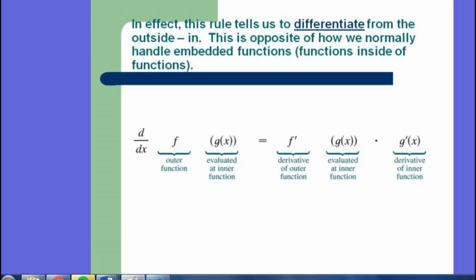In effect, this rule tells us how to differentiate from the outside in. It's the opposite of what we normally do. When we learn math, we always say parentheses first, absolute values, you did the inside first. Well, the chain rule is the opposite. It's outside in. So you do the outermost function first and work your way in. So if it's f of g, we're going to derive f, not touch g, then times it by the derivative of g. So it's the derivative of the outside, leave the inside, times the derivative of the inside.